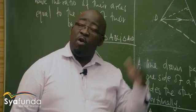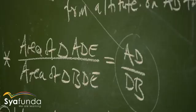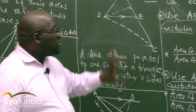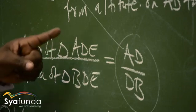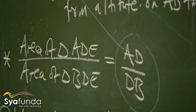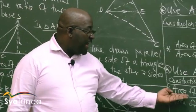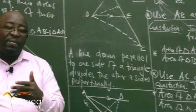Let's look at both equations. Let's look at the numerators. In equation one, the numerator is area of triangle ADE. In equation two, the numerator is also area of triangle ADE. So the numerators are the same — half the battle is won.